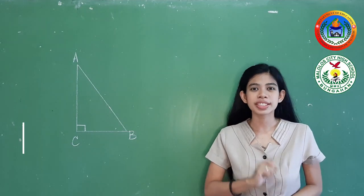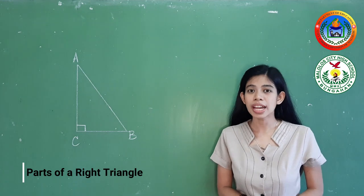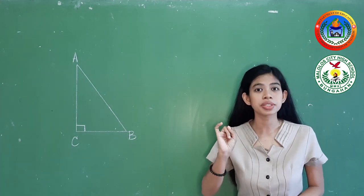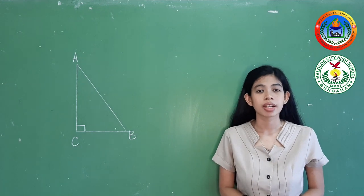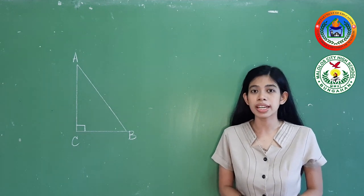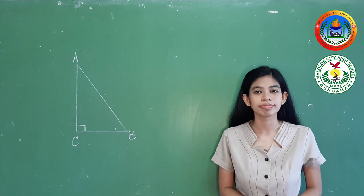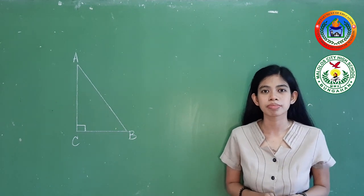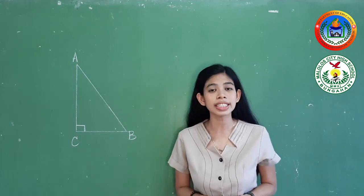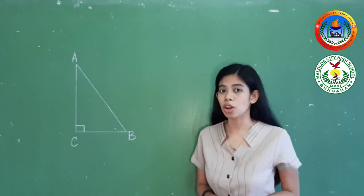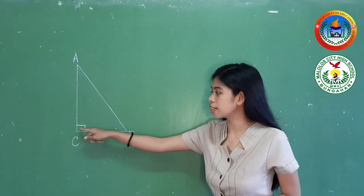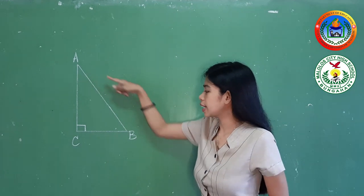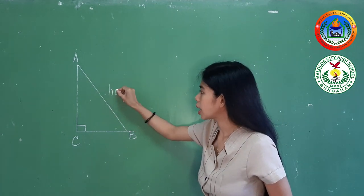Let us first name the parts of a right triangle. We actually have two parts of a right triangle: the hypotenuse and the legs. However, the legs could be an adjacent or an opposite side. Let us first talk about the hypotenuse. The hypotenuse is the longest side in a right triangle. It is always located opposite the right angle. So, in this triangle, side AB is our hypotenuse.